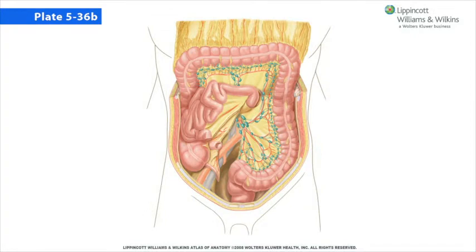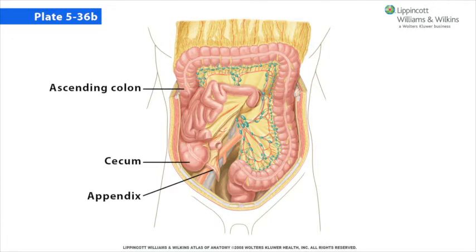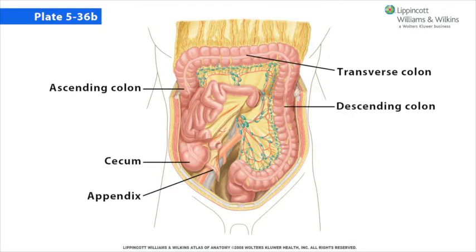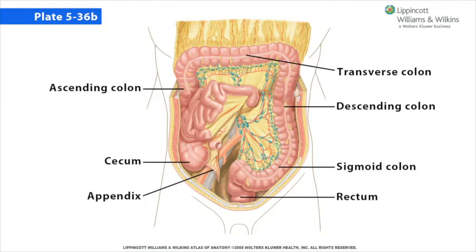I'll be back later for a clinical correlation and the end-of-session quiz, but for right now I'm going to turn you over to our primary lecturer, Dr. John Phelan, to continue his discussion of the abdominal organs. The large intestine consists of the cecum, the appendix, the ascending colon, the transverse colon, the descending colon, the sigmoid colon, the rectum, and the anal canal. The ascending, transverse, descending, and sigmoid colon surround the jejunum and the ileum.